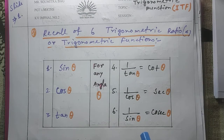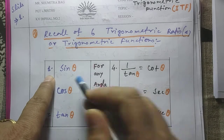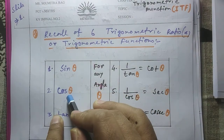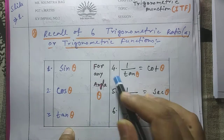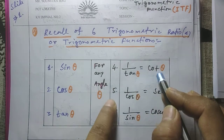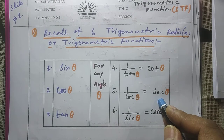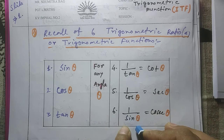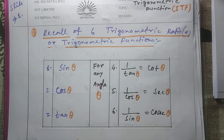We already know we have 6 trigonometric ratios or trigonometric functions that we learned in class 10. For any angle theta, the first one is sin theta, the second one is cos theta, the third one is tan theta. The fourth one is the reciprocal of tan theta, that is cot theta. The fifth one is the reciprocal of cos theta, that is sec theta. And finally, the reciprocal of sin theta, that is cosec theta. In this way we have a total of 6 trigonometric ratios or functions.